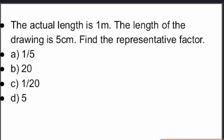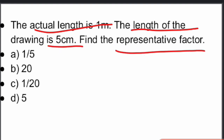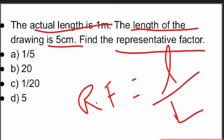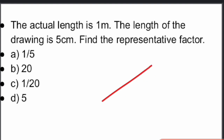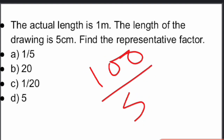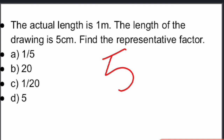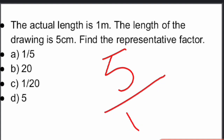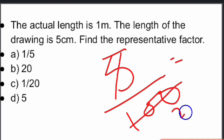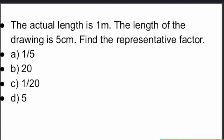Next: the actual length is 1 meter and the length of drawing is 5 centimeters. What is the representative fraction? Using the formula RF = length of drawing divided by actual length: actual length is 1 meter = 100 centimeters, length of drawing is 5 centimeters. So RF = 5 by 100 = 1 by 20. Option C is the right answer.